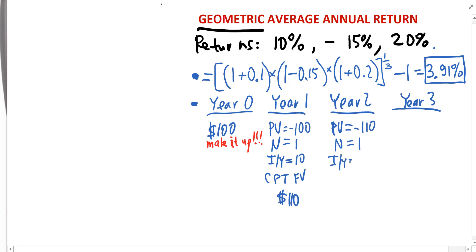IY, the return on the stock investment, right? During the second year. That's a negative 15% return. So that's my IY. And I'm computing the future value. Okay.